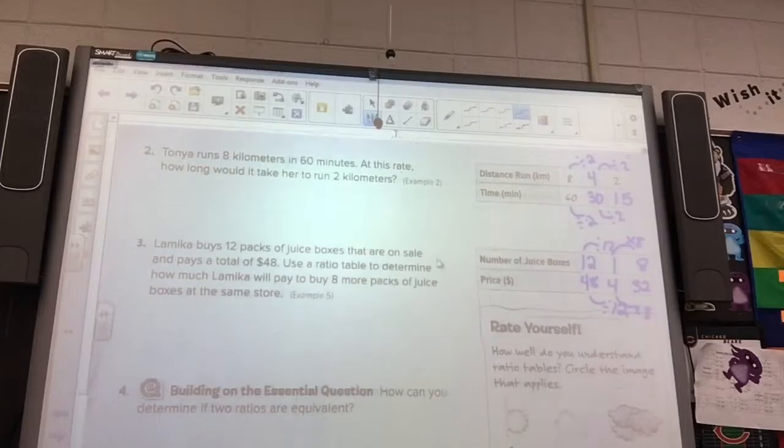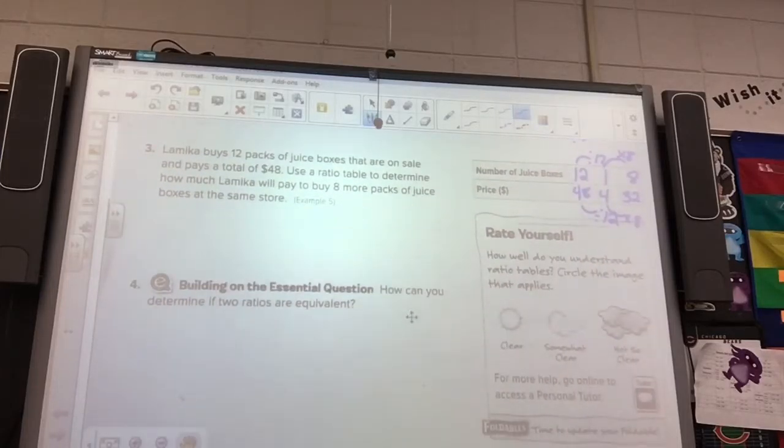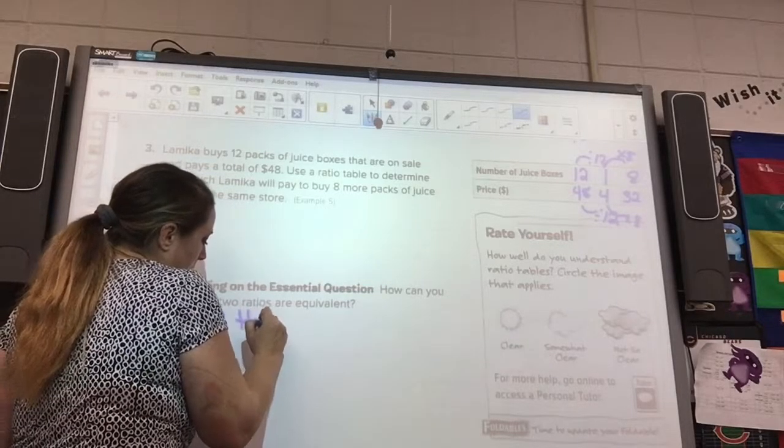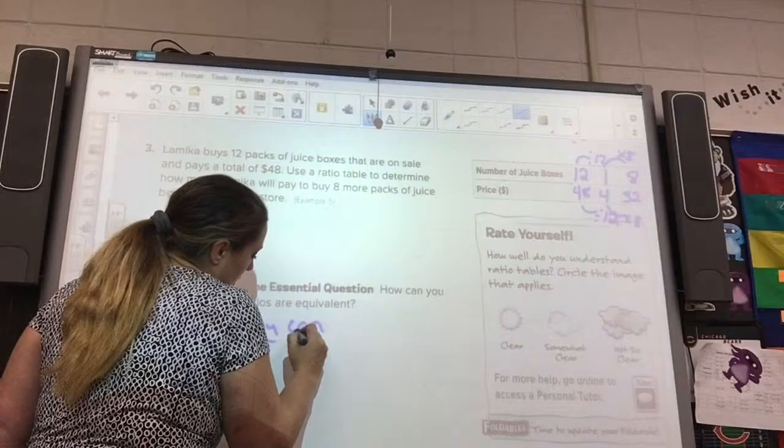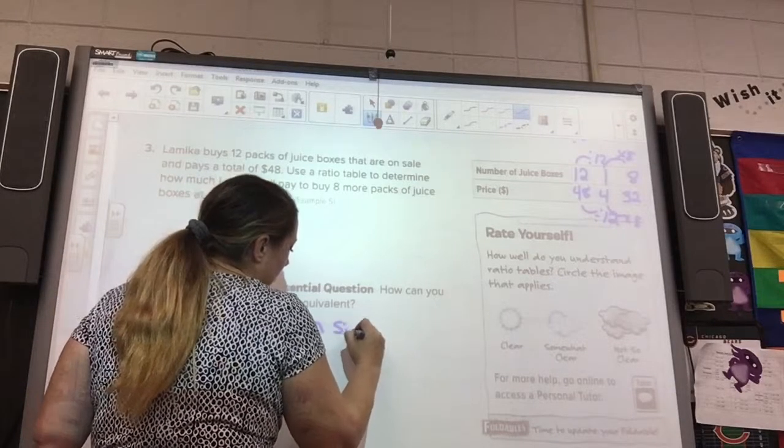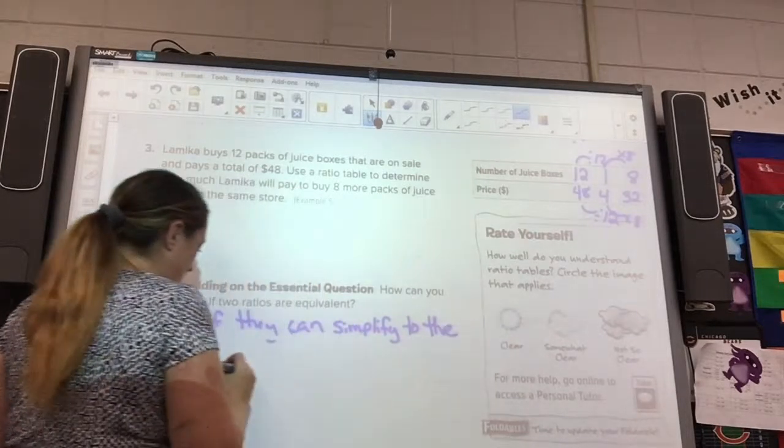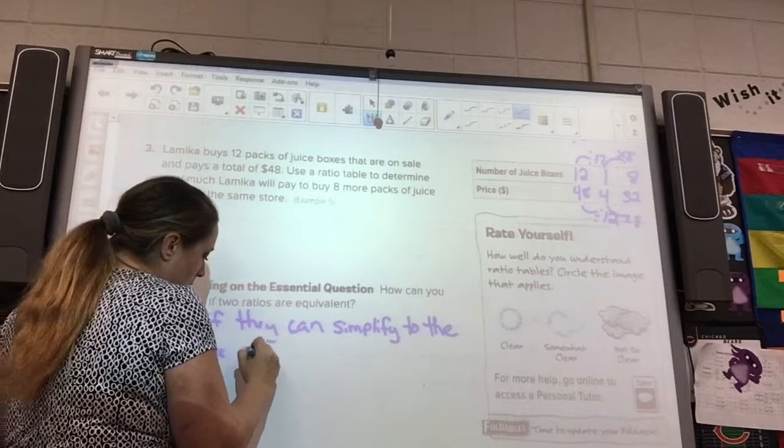At the bottom, it says, how can we determine if two ratios are equivalent? How do you think we can determine that? If they are simplified by the same ratio, then they are equivalent. If they can be simplified to the same ratio, for example, 1 third, 2 sixths, and 3 ninths are all equivalent, because they simplify to 1 third. So, if they can simplify to the same ratio...